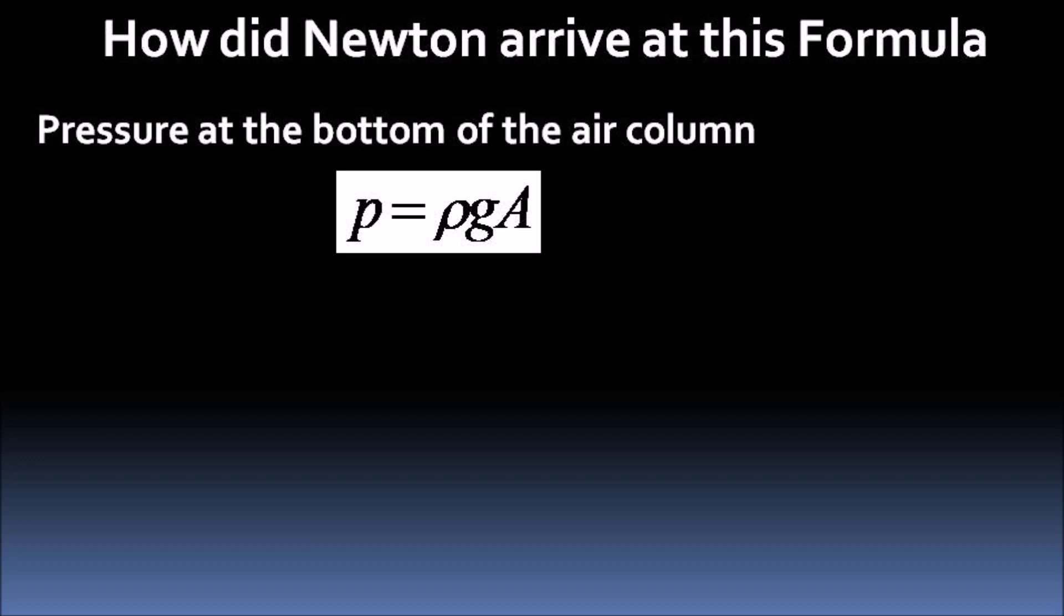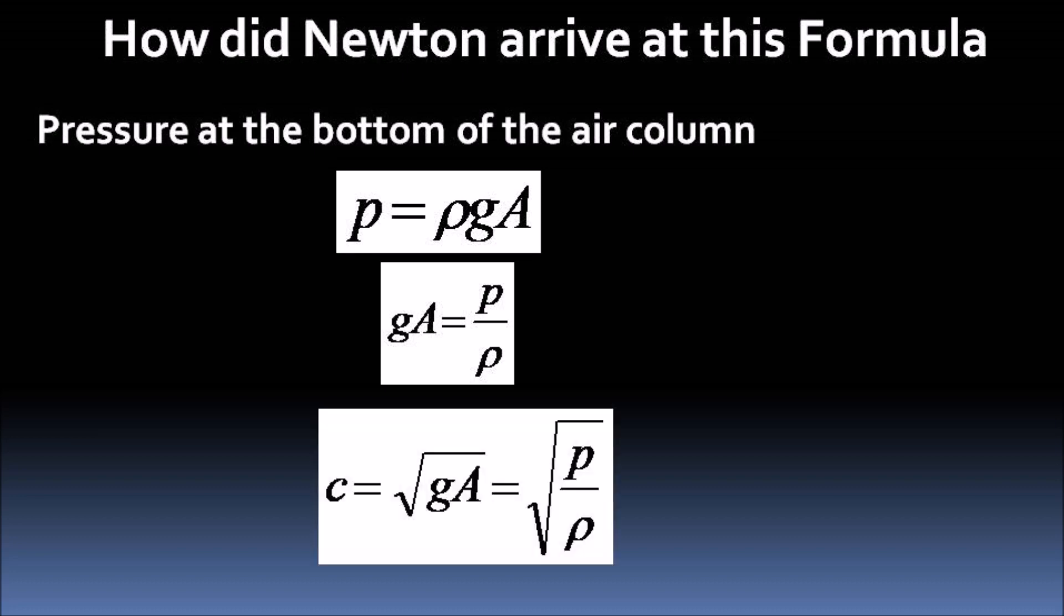Then Newton goes back to the expression for the pressure at the bottom of the air column. P is equal to rho GA. From here the value of GA comes out to be pressure divided by density, P by rho. Just putting the value of GA in the speed of sound expression, Newton got his famous formula for the speed of sound being equal to square root of the ratio of pressure and density.